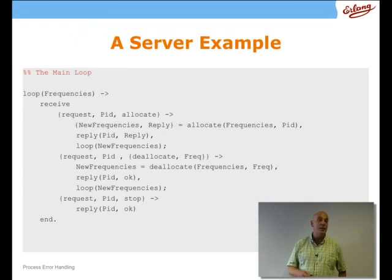Let's see what the loop does because this is where all the work goes on inside the frequency server. And you can see that there are three sorts of messages we can send. We can send a request to allocate a PID, a request to deallocate a particular frequency and a request to stop. Let's look at the stop case first. What happens in the stop case is we simply reply OK to the client and terminate. So that indeed terminates the loop.